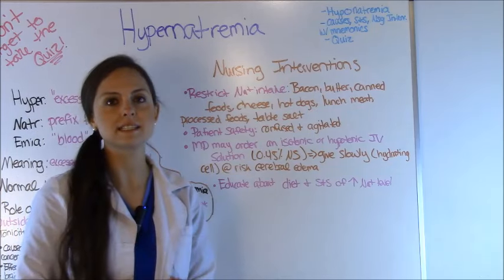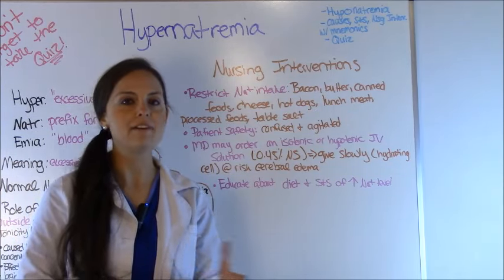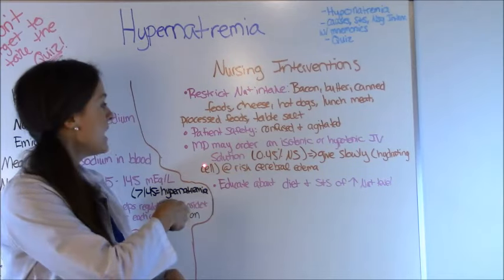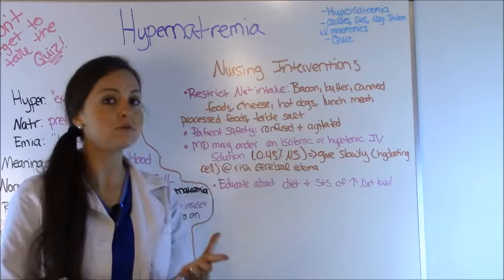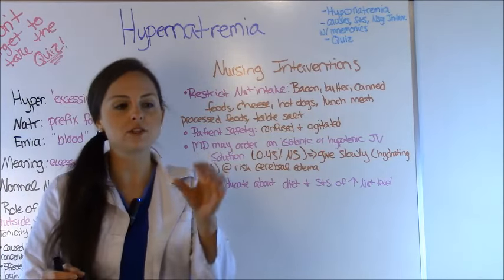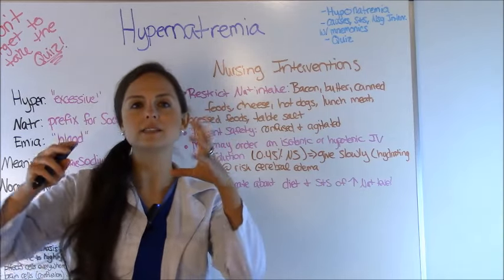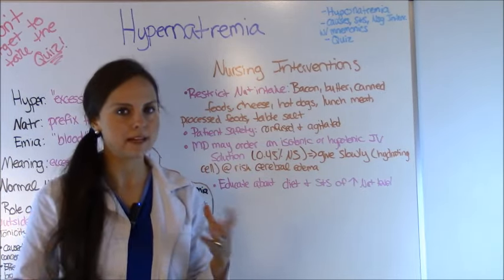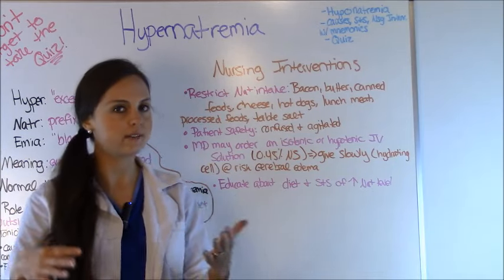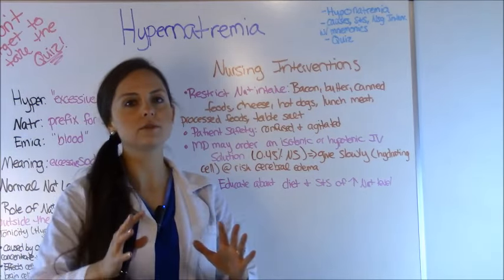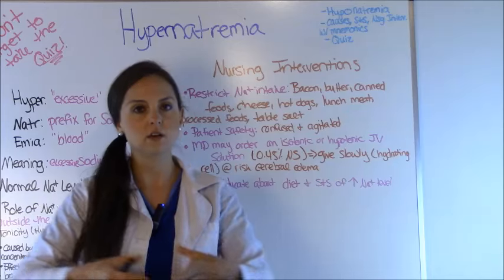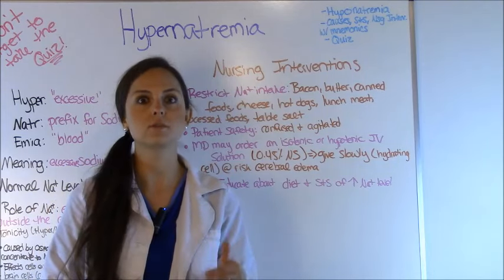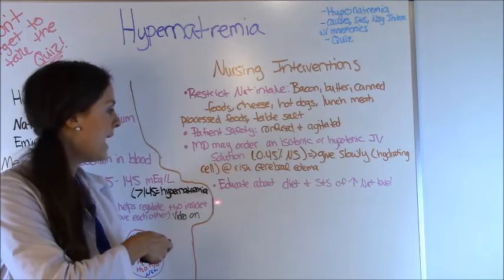Next, ensure patient safety, because the patient is confused and agitated — make sure the call light is within reach and consider moving them closer to the nurse's station. The MD may order an isotonic or hypotonic IV solution, commonly 0.45% saline, because the cell has shrunk and dehydrated and we need to move fluids back into it. However, give this slowly because shifting fluids too fast can expand the cell too much. Watch for cerebral edema — any increased signs of confusion — indicating you're giving too much fluid too quickly.